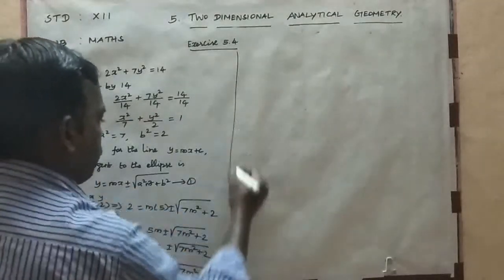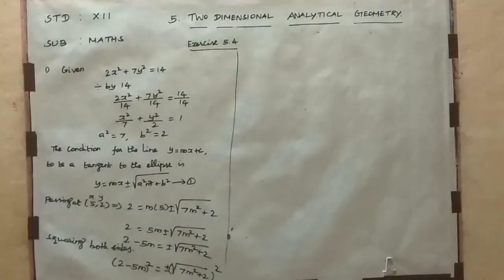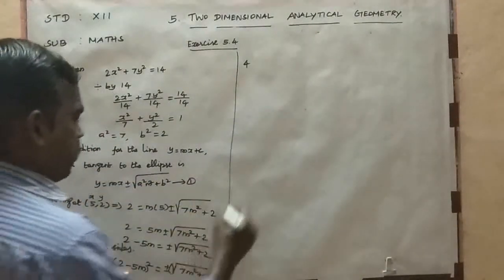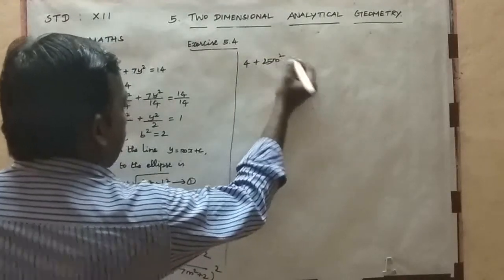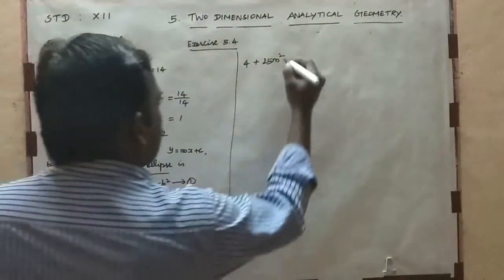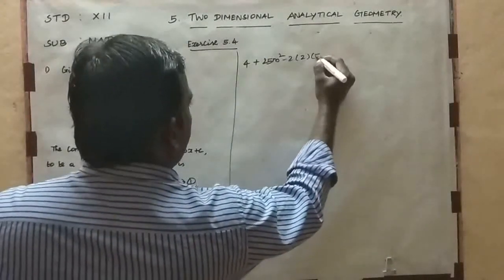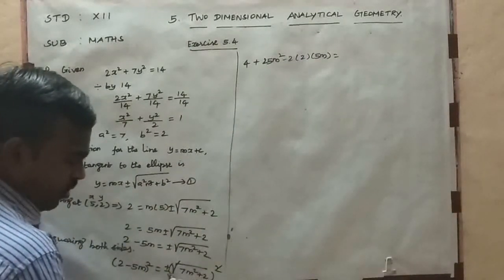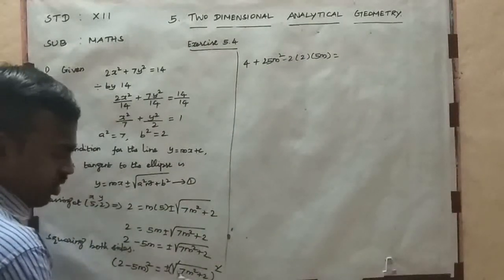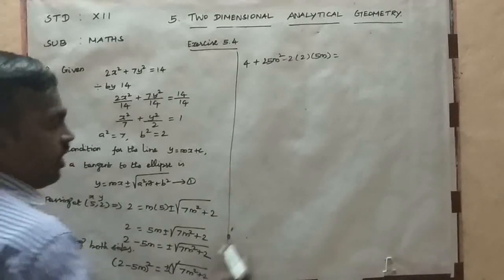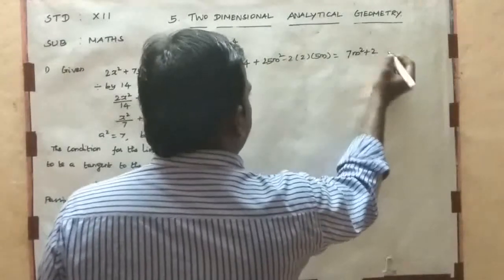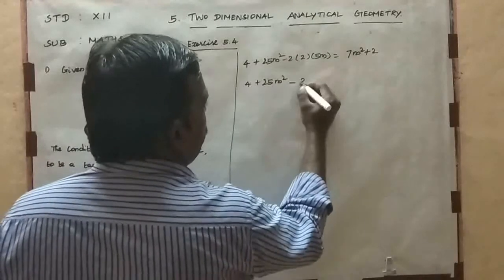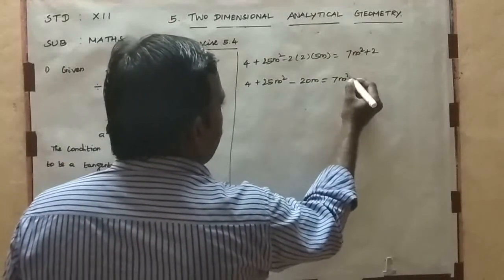That is the (a − b)² formula: a² + b² − 2ab. So 4 + 25m² − 2(2)(5m) = 7m² + 2. The square of the root cancels the ± sign, leaving 7m² + 2. So 4 + 25m² − 20m = 7m² + 2.